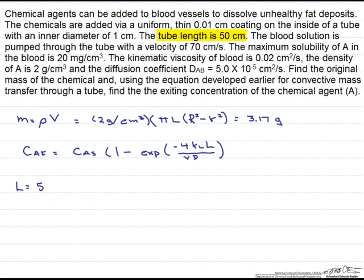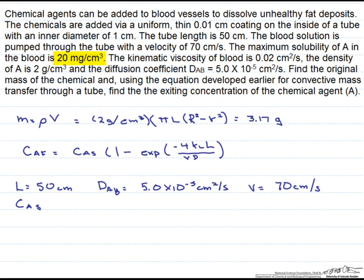We know that the length is 50 centimeters and we have our diffusion coefficient. The velocity of the blood is 70 centimeters per second. Our surface concentration is equal to the maximum solubility of A in the blood. Be careful with these units because it is given in milligrams rather than grams. The diameter is 1 centimeter.